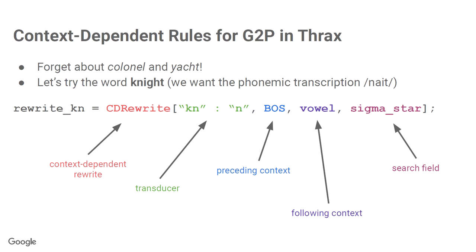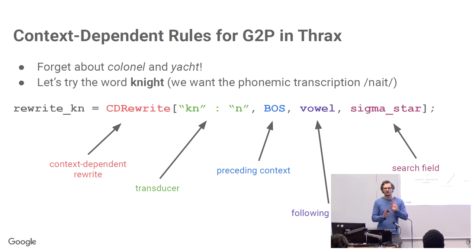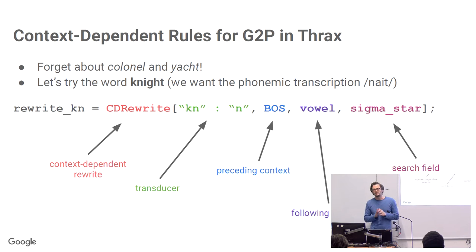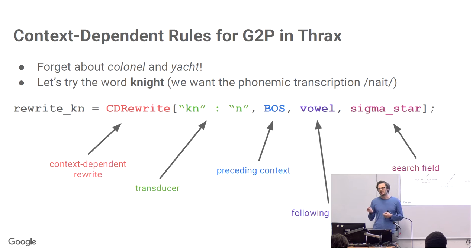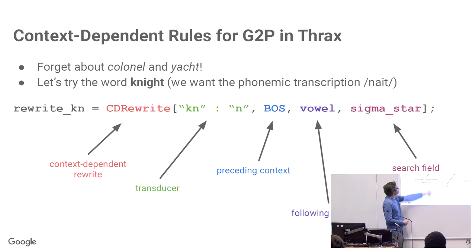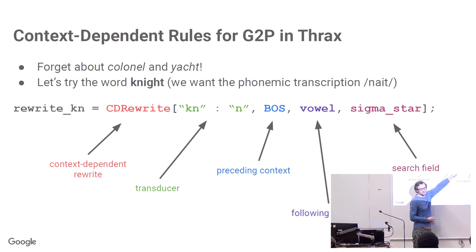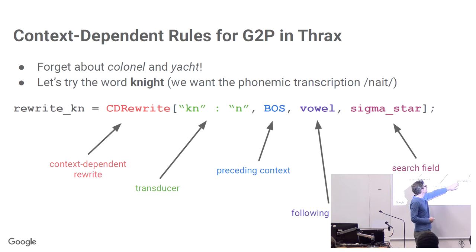Here's a context-dependent rule written in Thrax. For a word like 'knight', it's possible to get from the spelling K-N-I-G-H-T to the phoneme transcription N-A-I-T. First, we deal with the silent K: a CD rewrite that rewrites KN to N, with preceding context being the beginning of the string and following context being a vowel. So we can get to N-I-G-H-T. Then a second rule rewrites I-G-H to A-I, where the left context is a consonant and the right context is a consonant or end of string. With just those two rules, you can take the spelling and get the correct pronunciation.